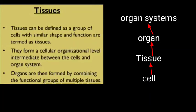Millions of cells are present in the body of a multicellular organism. These cells are divided into different groups, and each group performs a definite function — for example, we perform movements due to contraction and relaxation of muscles, and conducting tissues in plants transport water and food to all parts. Tissues can be defined as a group of cells with similar shape and function. They perform at a cellular organizational level intermediate between cells and organ systems.